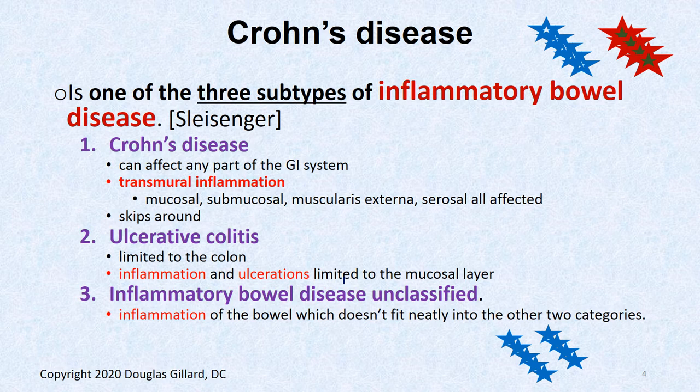Crohn's disease is a member of the inflammatory bowel diseases, which include Crohn's disease and ulcerative colitis, plus an unclassified category. Crohn's disease is a wicked, transmural inflammation — meaning it affects all three layers of the intestinal wall, whether it's the large intestine, small intestine, rectum, anus, or esophagus.